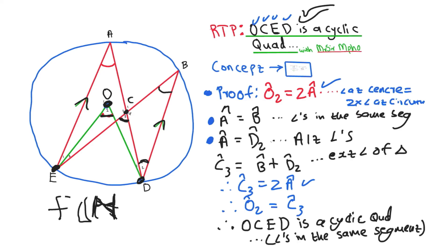The magic trick in proving this type of question is the last reason. The last reason will always be a property of a cyclic quad. That's why you first need to know which of the three properties you're going to use — it will always be your final reason when you conclude the diagram is a cyclic quad.